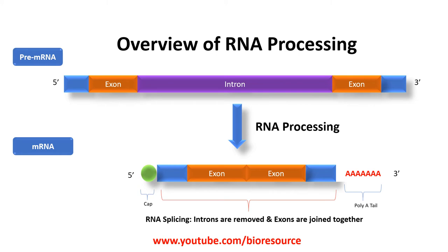Let's see the overview of RNA processing. The pre-mRNA will be processed to form mature mRNA through RNA splicing. In RNA splicing, the introns are removed and the exons are joined together to form mature mRNA. A 5-prime cap is added to the 5-prime end and a poly-A tail is added to the 3-prime end. This is to prevent the attack of nucleases. The pre-mRNA is produced inside the nucleus and transported to the cytoplasm for translation. Once spliced, the cap and poly-A tail are added to prevent degradation.